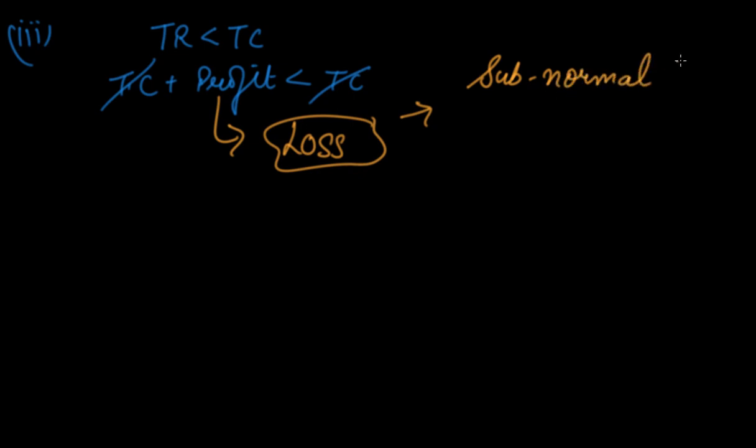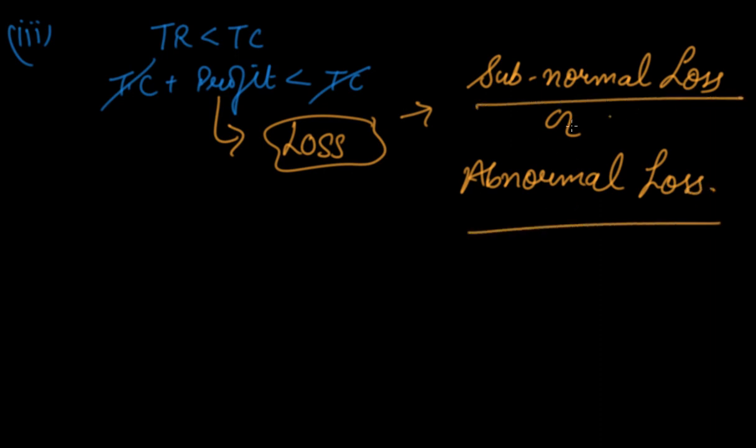So in this video we have studied about the producer's equilibrium, a general view. In the next videos we will study about the different approaches and these normal profits, super normal profit, and sub-normal loss. I hope you like our video. Please download our Scholars Learning app and enjoy the learning experience with us.